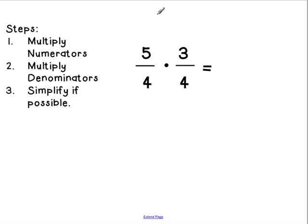And one last example for multiplying. Multiplying my top numbers. 5 times 3 is 15. 4 times 4 is 16. So, we get 15 sixteenths. Can't simplify. So, that's my final answer.